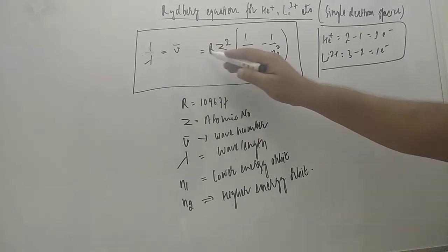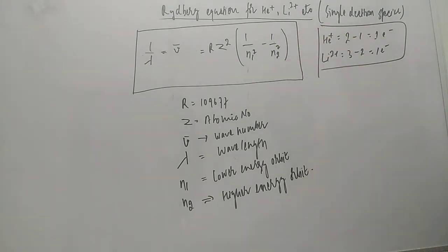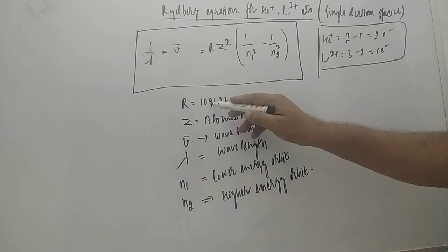RZ² where Z is atomic number, and in bracket one by n₁ square minus one by n₂ square. So R is the same, that is 109,677 per centimeter inverse.